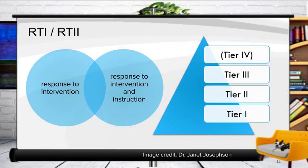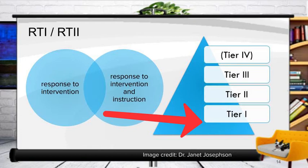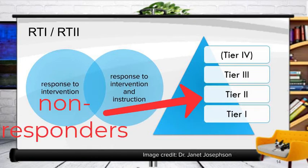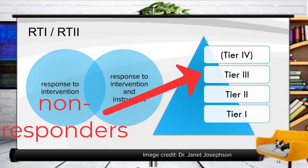In tier one, this is high quality instruction for all students, and this is where we do the screening — maybe three times a year with something like DIBELS for early literacy. Students who are non-responders move into tier two, where we do more intensive intervention and instruction. They go up through the tiers when they don't respond to the intervention — tier one, two, three, and in some states a fourth tier — and then a referral for special education services.